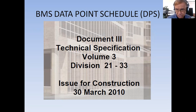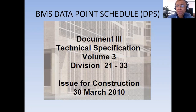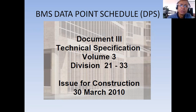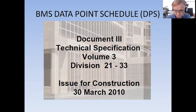This project is a five-star hotel. As you can see on my screen, the document is entitled Technical Specification Volume Three, Division 21 to 33. The specification document is a PDF file composed of thousands of pages. You have to go specifically to the relevant division — in this case, building automation is Division 25. Based on this document you will define and finalize your data point schedule.